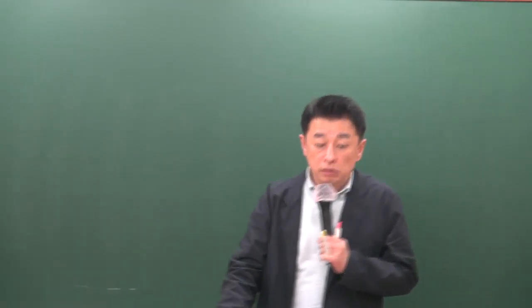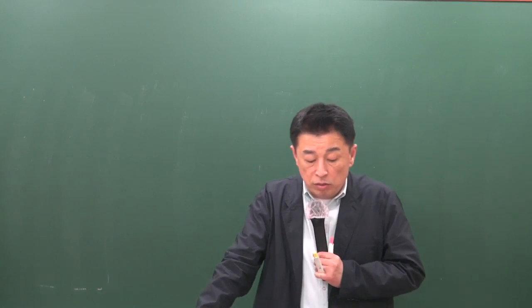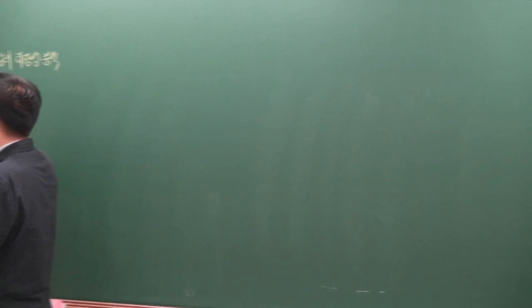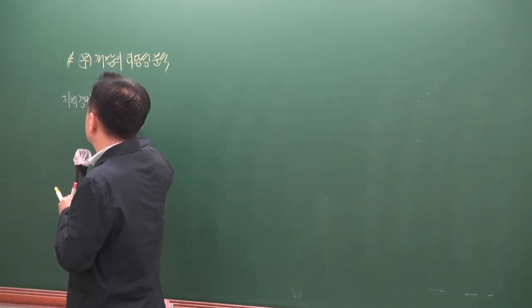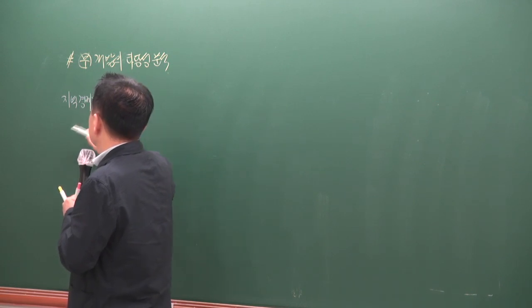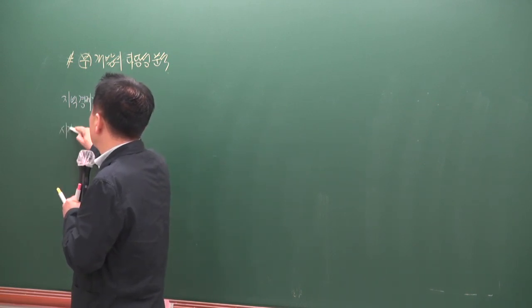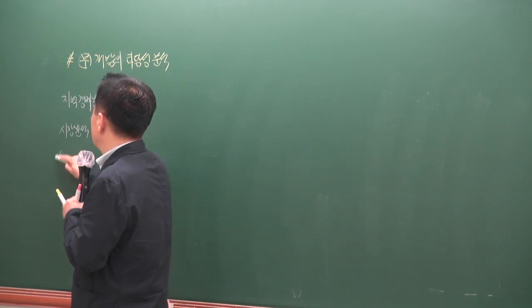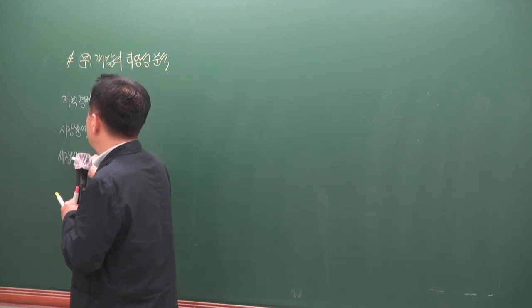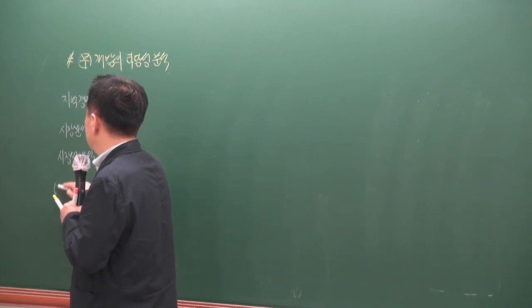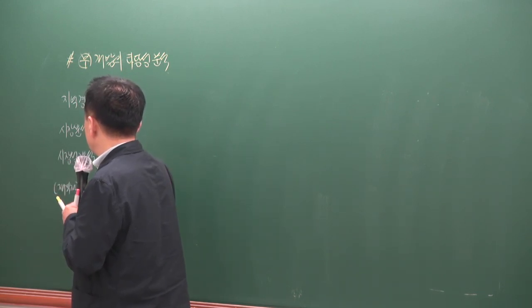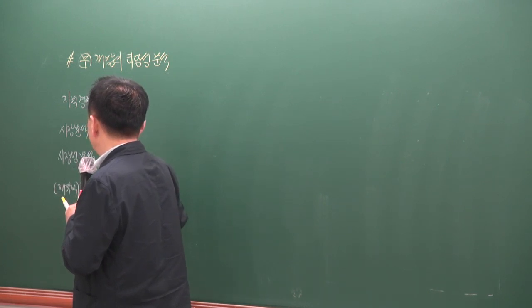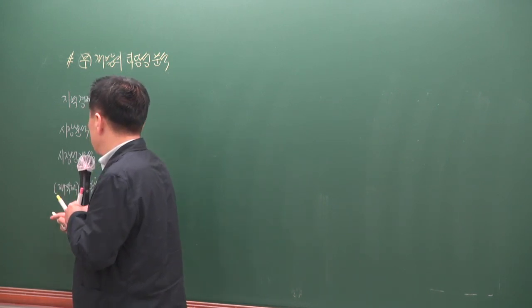부동산 개발의 타당성 분석에는 지역경제 분석, 시장 분석, 시장성 분석, 재무적 타당성 분석, 그리고 투자 분석이 있습니다.